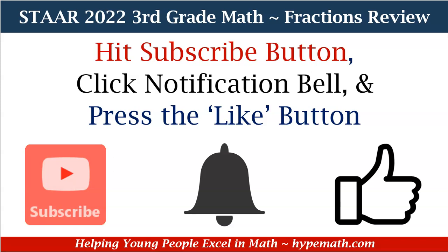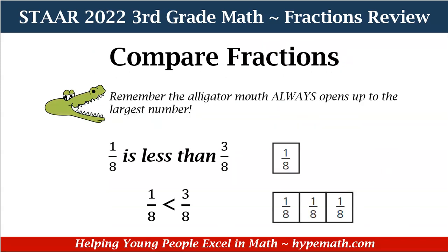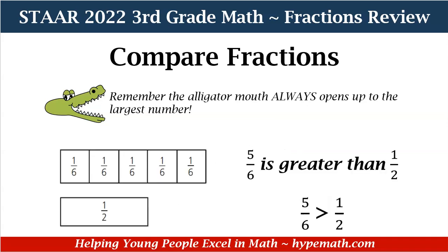Let's talk about comparing fractions. One thing to remember, third graders, is that the alligator mouth always opens up to the largest number or the largest fraction. So let's look at our example: one-eighth is less than three-eighths. We see that one-eighth, which is one square, is less than three-eighths. Remember, the alligator mouth opens up to the largest fraction, which is three-eighths.